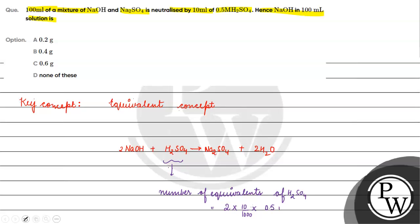This equivalents will come to 20 into 0.5 by 1000, which equals 10 by 1000.